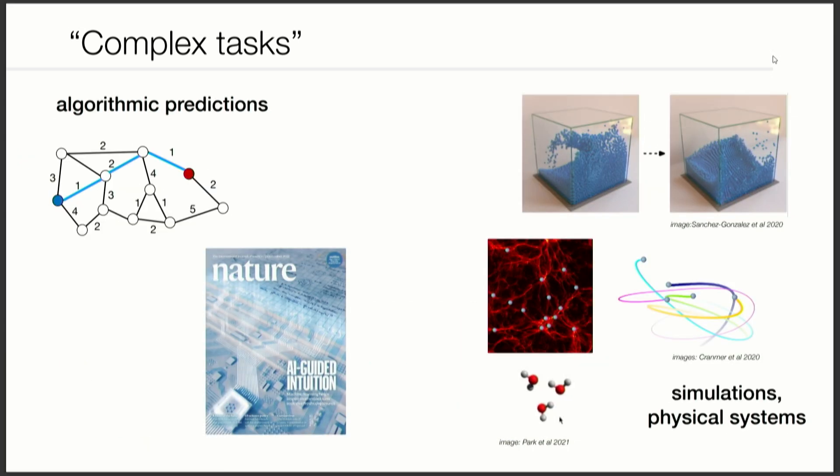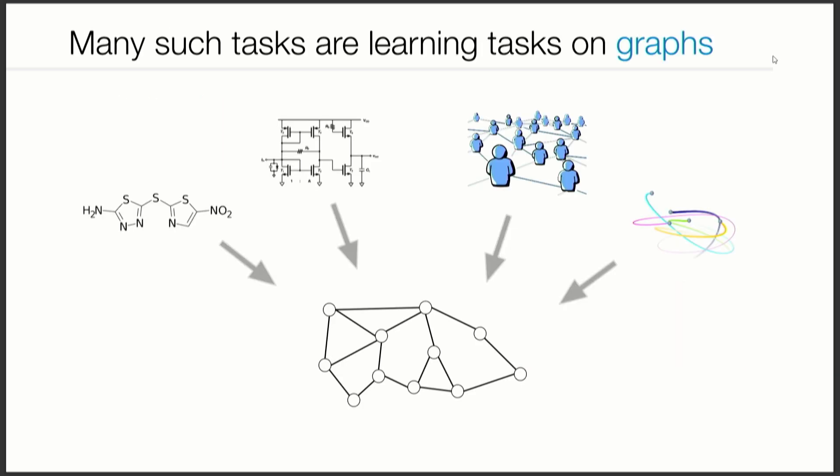I'm also thinking about tasks that are more algorithmic in nature, like learning combinatorial optimization tasks, learning physical systems to forecast them, or learning their equations. Many such tasks that have these interrelations can be viewed in a unified way as learning from graphs — learning where the input is a graph.